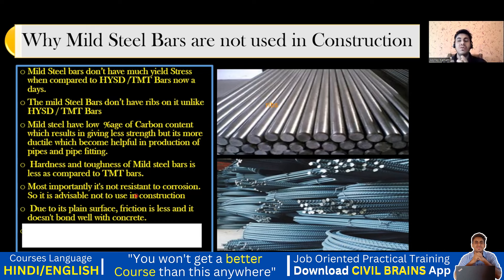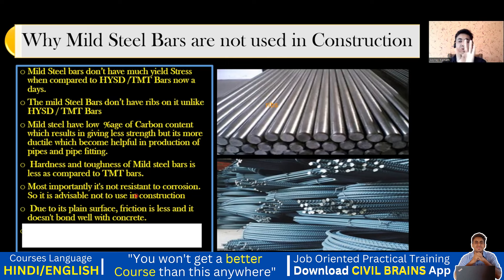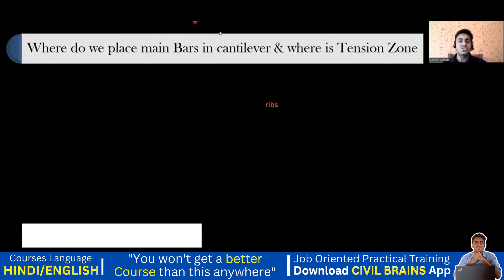Try to understand the concept of ductility and carbon content: the greater the carbon content, the more the strength and toughness, but the less the ductility. So between mild steel and HYSD, mild steel is more ductile. HYSD has more strength, so more carbon content, so less ductility. Mild steel has less strength, less carbon, and therefore greater ductility.